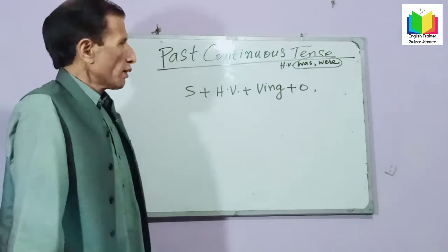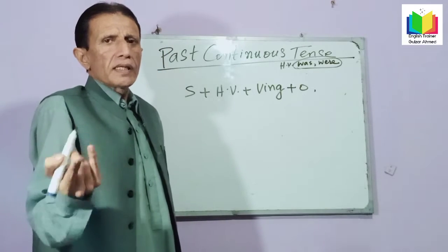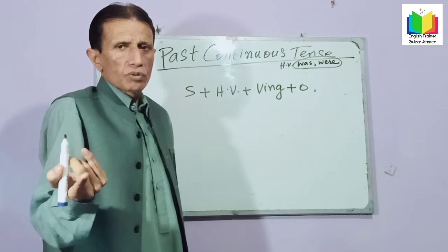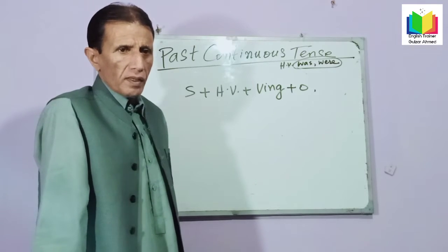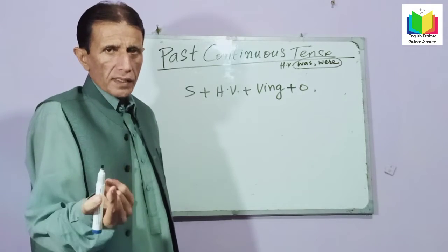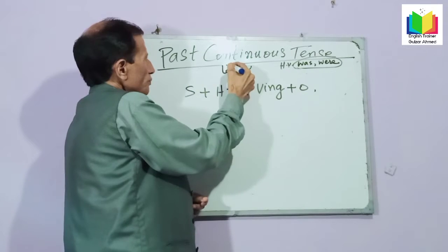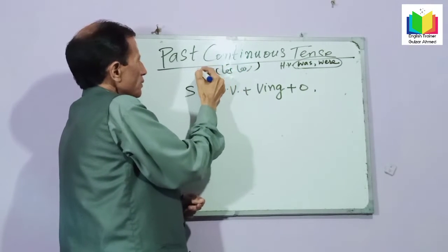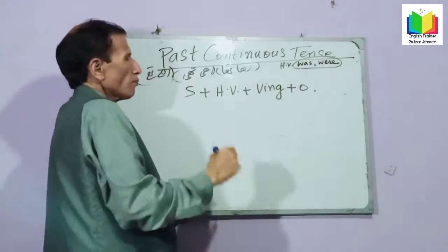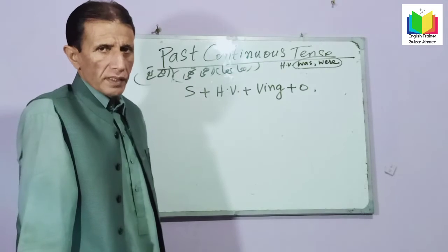This is the basic formula of this tense. What is the indication — what is the symbol of an Urdu sentence? As we know: raha tha, rahi thi, rahe the, etc. But in English we will write it differently.